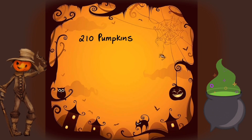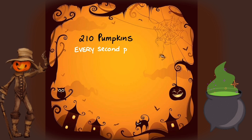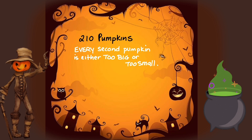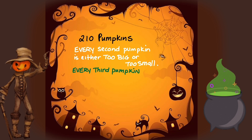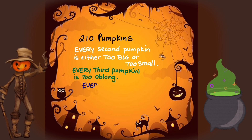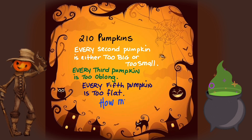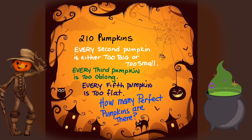We start off with 210 pumpkins. Our goal is to find the perfect pumpkin. Every second pumpkin is either too big or too small. Every third pumpkin is too oblong. And every fifth pumpkin is too flat. How many perfect pumpkins are there? Pause the video now and see if you can figure it out.